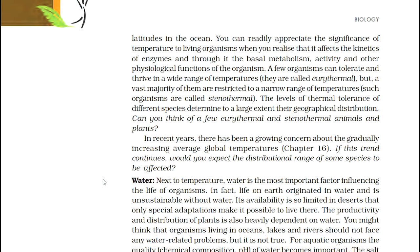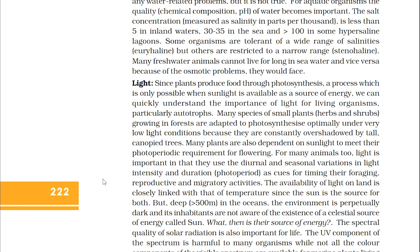Since plants produce through photosynthesis, a process which is only possible when sunlight is available as a source of energy, we can quickly understand the importance of light for living organisms, particularly autotrophs. Many species of small plants, herbs and shrubs growing in forests are adapted to photosynthesize optimally under very low light conditions because they are constantly overshadowed by tall canopy trees. Many plants are also dependent on sunlight to meet their photoperiodic requirement for flowering. For many animals too, light is important as they use the diurnal and seasonal variation in light intensities and duration — photoperiod — as cues for timing their foraging, reproductive, and migratory activities. Beyond 500 meters depth in the oceans, the environment is dark and its inhabitants are not aware of the existence of the sun. What then is their source of energy?